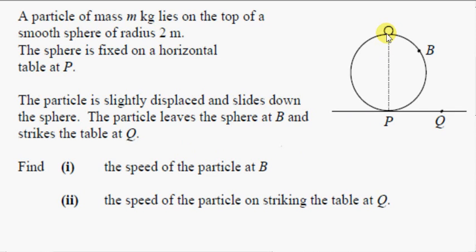A particle of mass m kilograms lies on the top of a smooth sphere of radius 2 meters. The sphere is fixed on a horizontal table at P. The particle is slightly displaced and slides down the sphere. The particle leaves the sphere at point B and strikes the table at some point Q. We want to get the speed of the particle at point B.